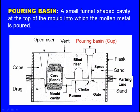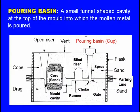Next, the pouring basin: when we pour molten metal from the top, the vertical passage (sprue) is narrow, making it difficult to pour without spilling. Therefore, the entrance is made wider to facilitate easy pouring. This wider funnel-shaped cavity at the top of the mould into which molten metal is poured is known as the pouring basin or pouring cup.